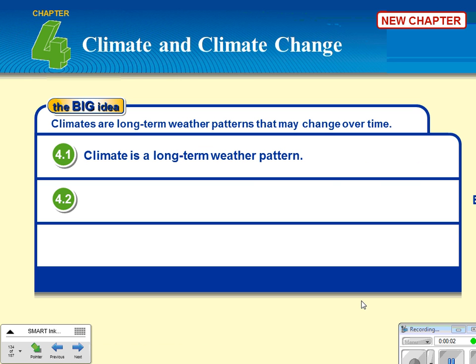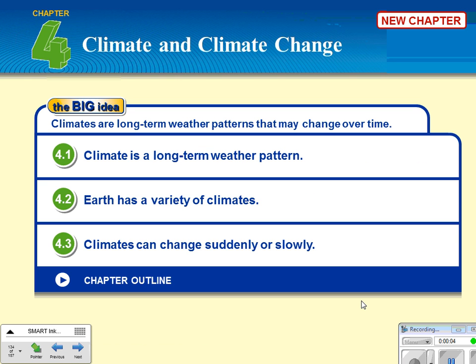These are the notes about climate and climate change. The main things to figure out here: climate is a long-term weather pattern. The earth has a variety of climates, and climates can change suddenly or slowly.